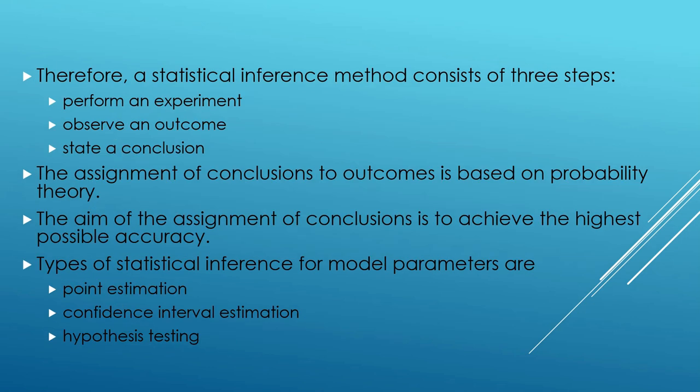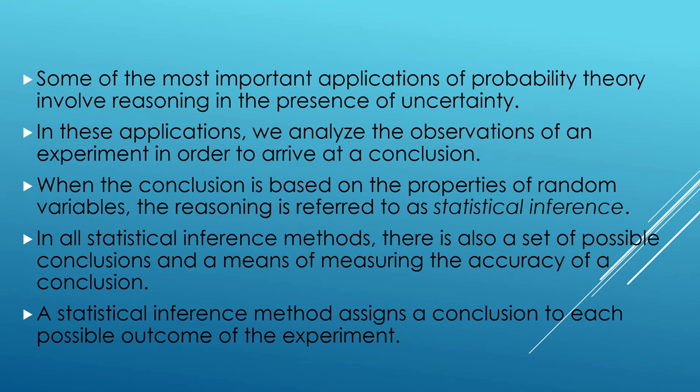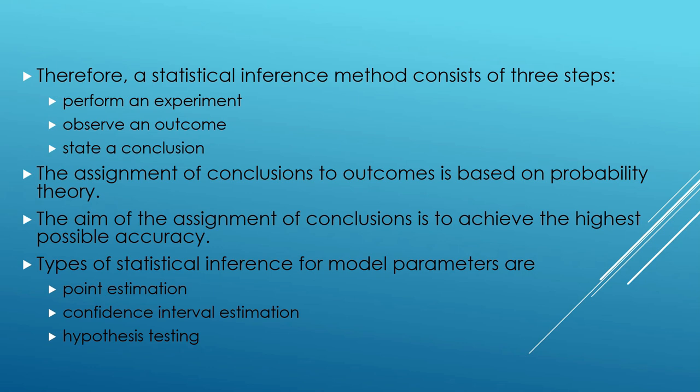Therefore, a statistical inference method consists of three steps. First, we perform an experiment. Then we observe the outcome. And then we state a conclusion. The assignment of conclusions to outcomes is based on probability theory, and the aim is to achieve the highest possible accuracy. The three types of statistical inference for model parameters are: point estimation, confidence interval estimation, and hypothesis testing.